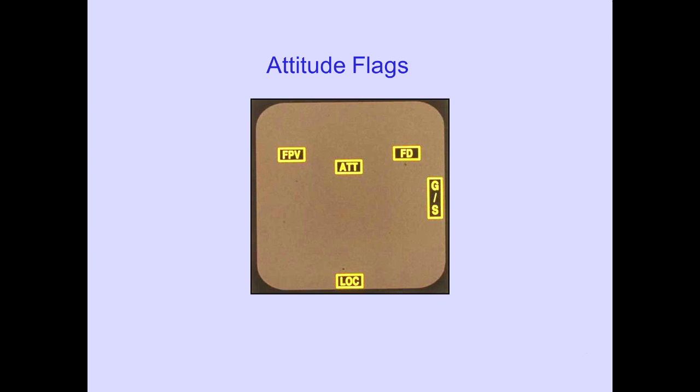The attitude flag is displayed when attitude information is invalid. The flight director flag is displayed when the flight director is selected but the information is invalid. The glide slope and/or localizer flag is displayed when the respective information is invalid.